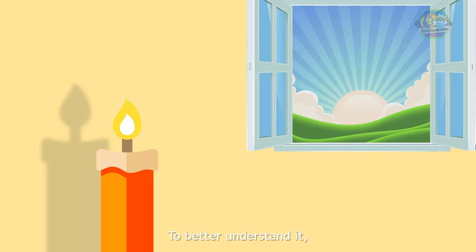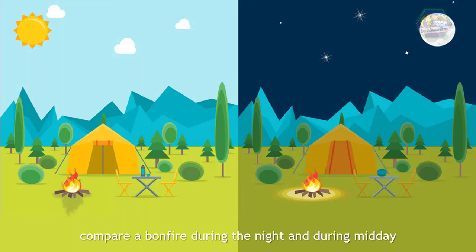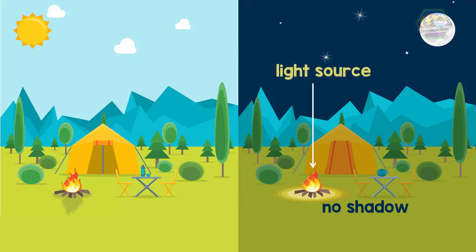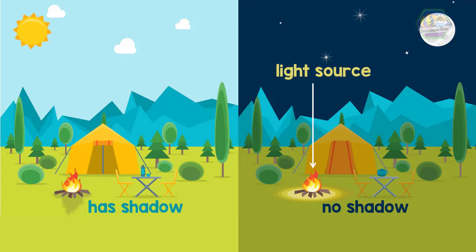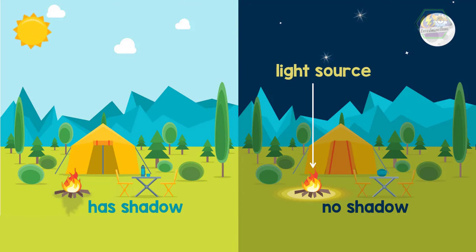To better understand it, compare a bonfire during the night and during midday. Notice that a bonfire at night doesn't have a shadow because it acts as the light source during the night. But if you make a bonfire during the day, it can be observed that it has its own shadow, because the light from the fire is overpowered by the light from the Sun. Thus, the bonfire during the day obstructs the light beams from the Sun, producing its own shadow.